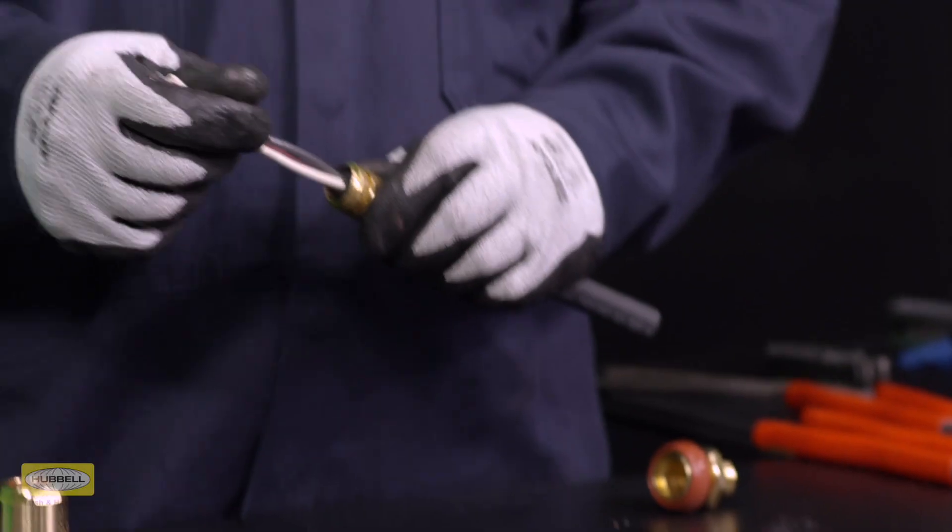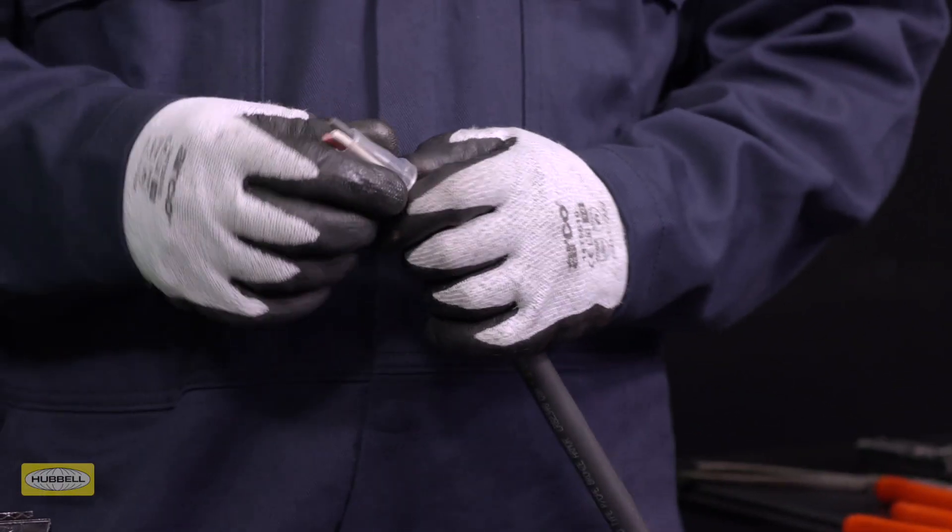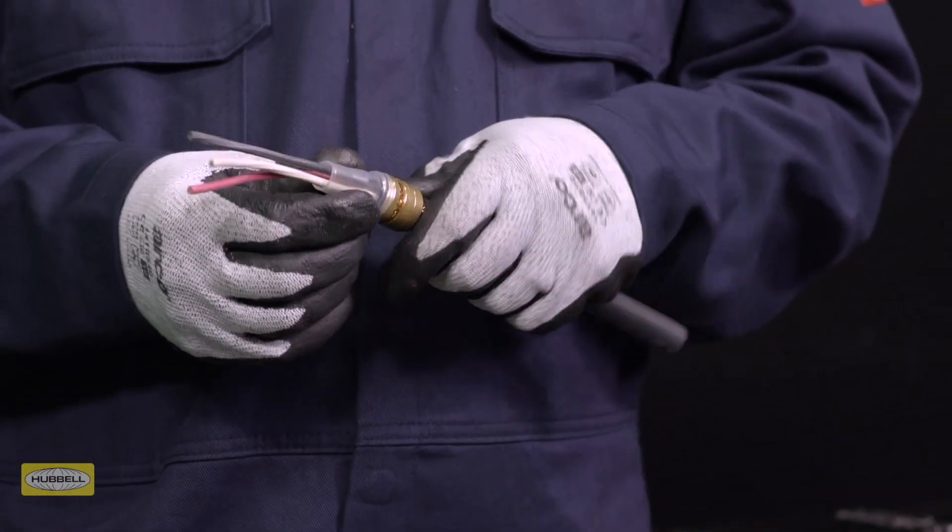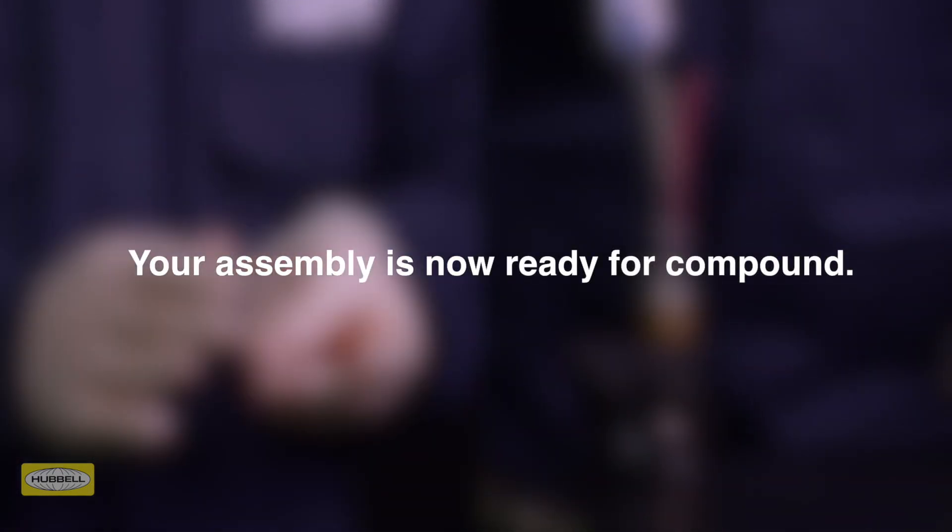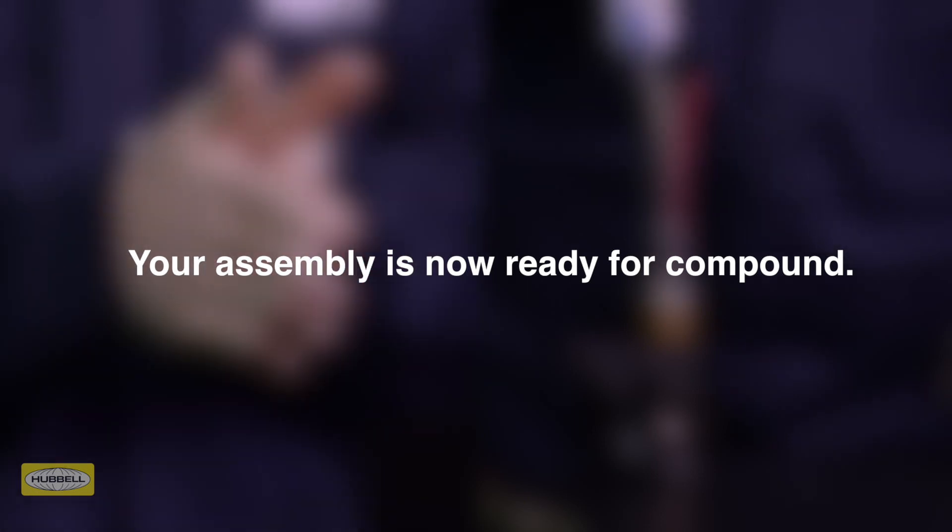Fit the pot and check that the inner sheath is the height of the pot shoulder. Your assembly is now ready for compound. Follow our HAWK Seal compound or Express Resin installation videos for step-by-step instructions.